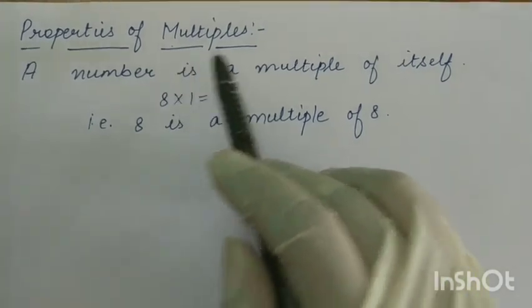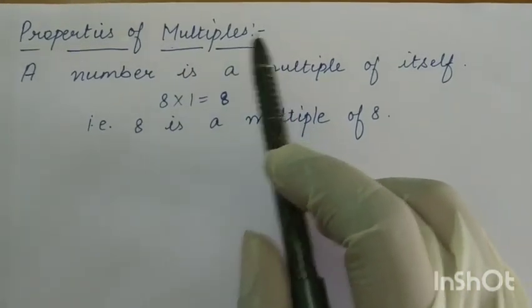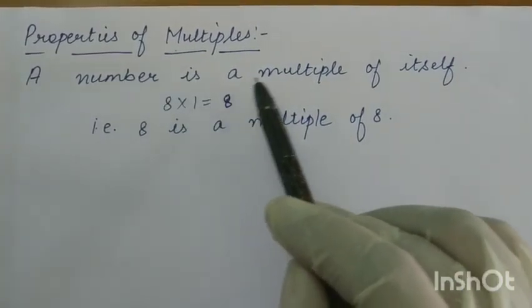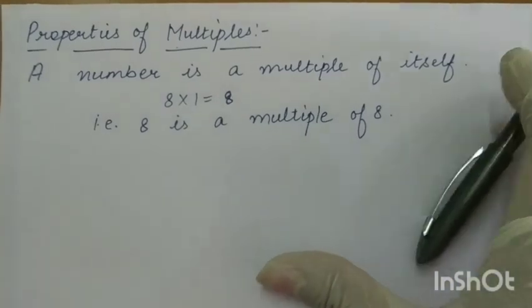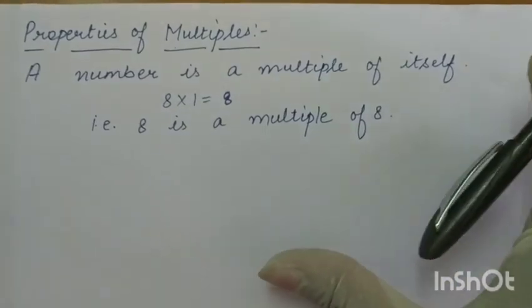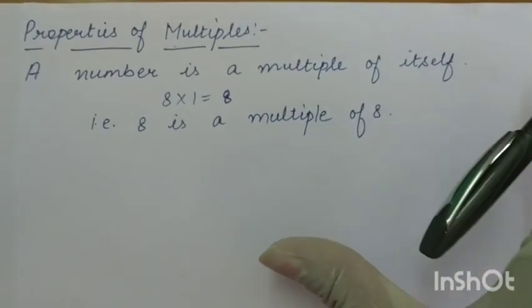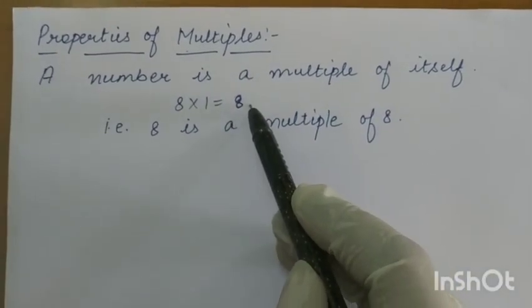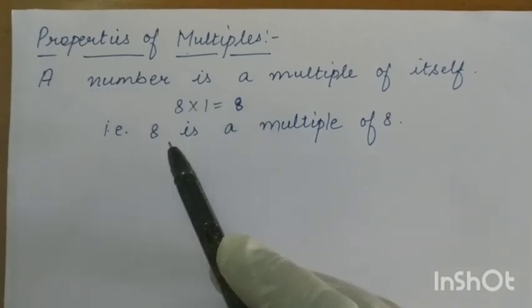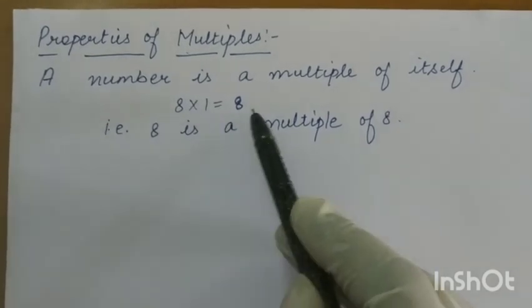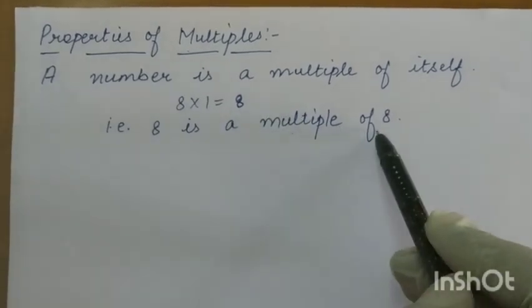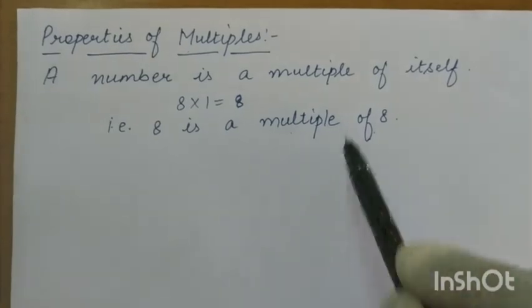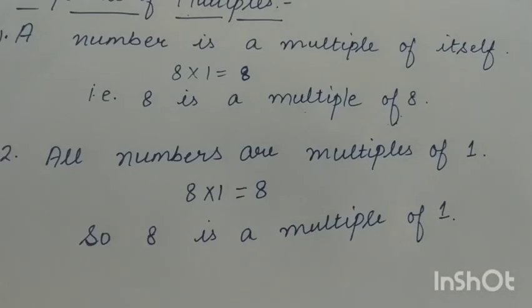Next are the properties of multiples. The first property is: every number is a multiple of itself. Here I have written 8 multiplied by 1 is equal to 8, that is 8 is a multiple of 8. So, every number is a multiple of itself.